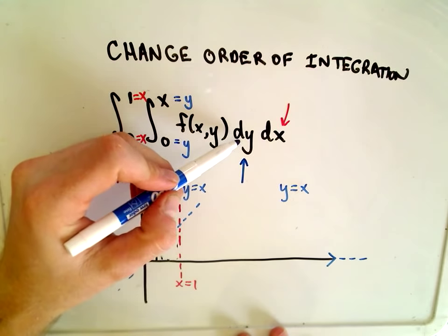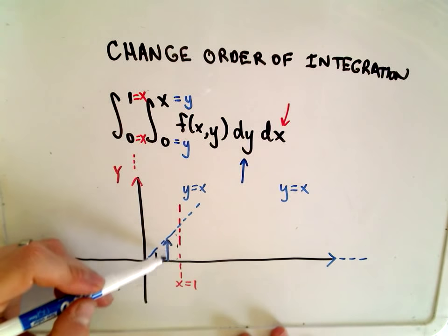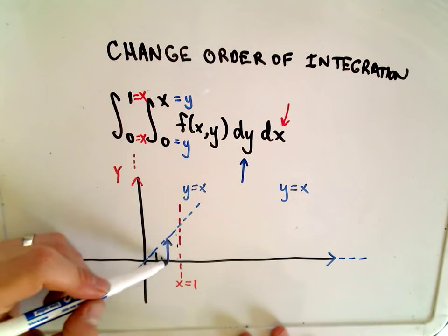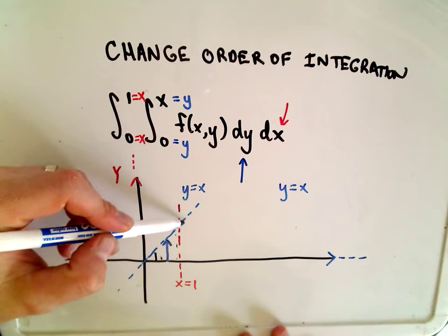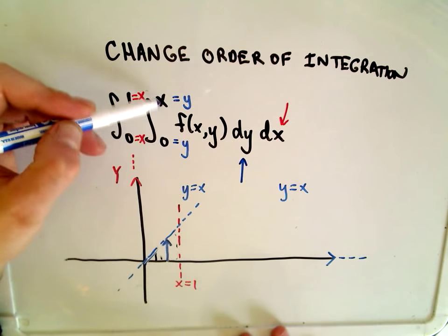If we integrate with respect to y first, I like to think about a vertical line parallel. It's parallel to y, which a vertical line would be. The bottom curve that it touches is y equals 0. The top curve that it touches is y equals x. And those become our limits of integration.